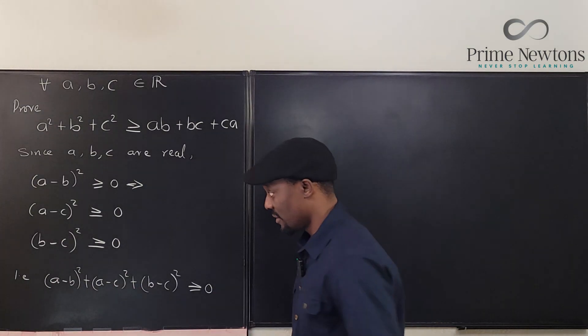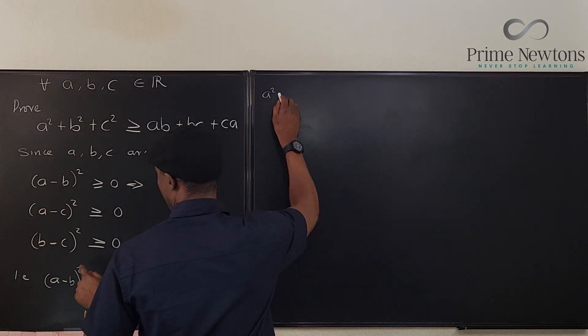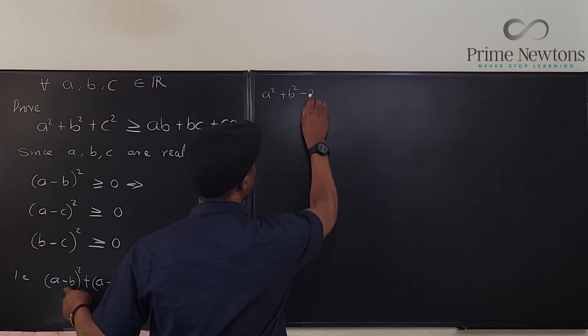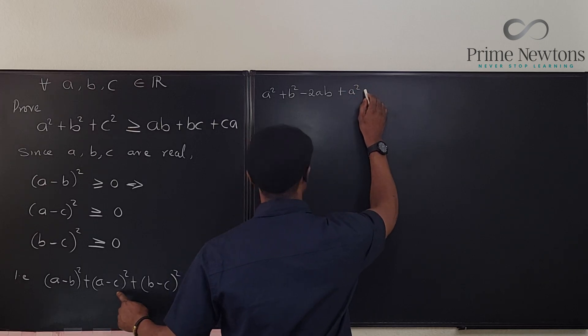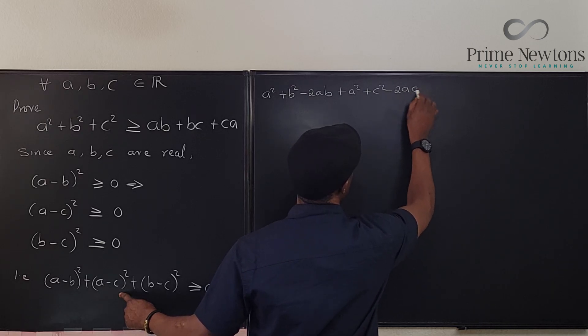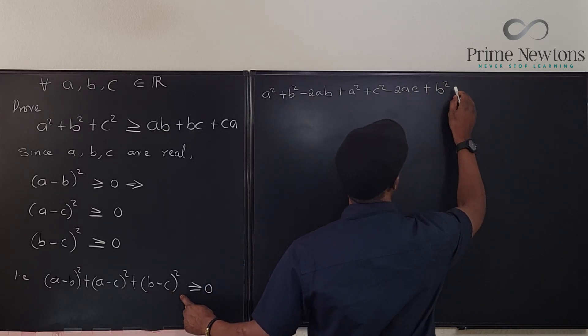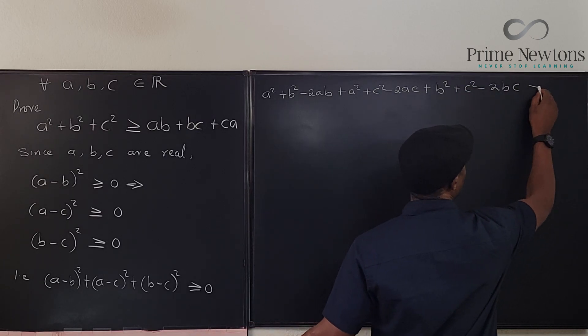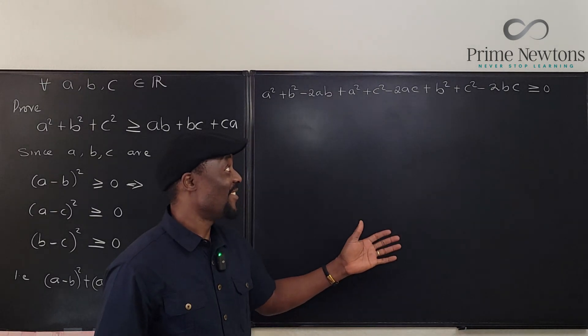So what I'm going to do is just expand all of these and I'm going to have A squared plus B squared minus 2AB plus A squared plus C squared minus 2AC plus B squared plus C squared minus 2BC. And we know this is going to be greater than or equal to zero. You can almost see that we're there already.